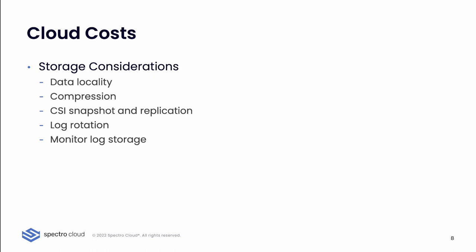Finally, pay attention to storage considerations: data locality within your AZ, enable compression where possible, use CSI snapshots and replication, and do log rotation. Monitor your storage for logs — because if you enable your Kubernetes logging service and have very chatty system components or applications, they can fill the log quite quickly. Since your storage scales on demand, at the end of the month you may see an extra terabyte or more on your bill that can be a very bad surprise. Monitor all this very closely.